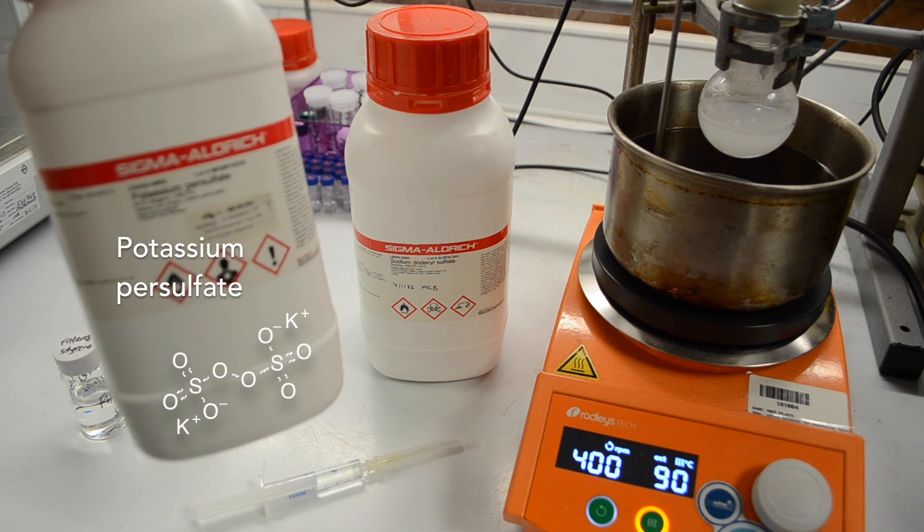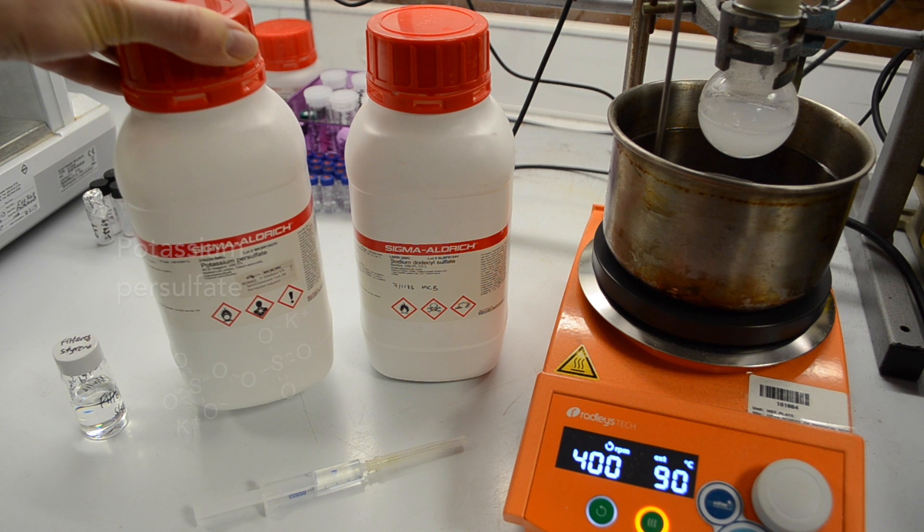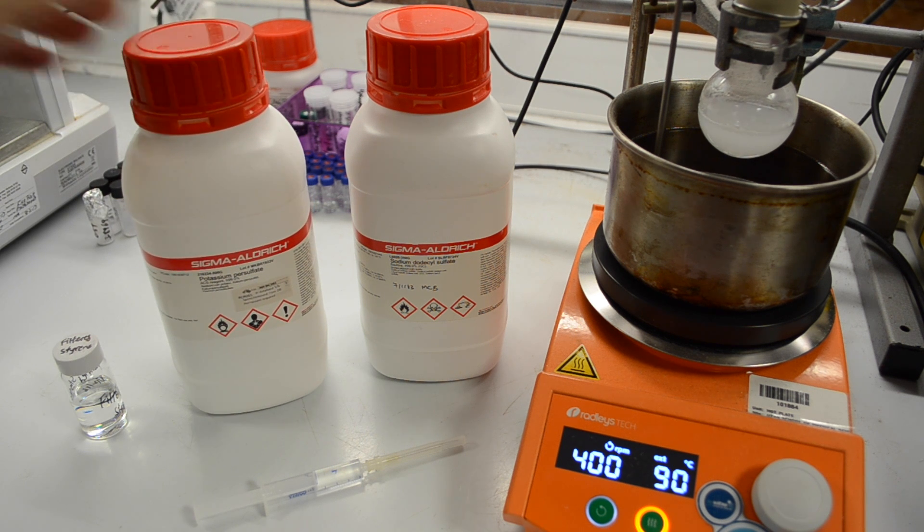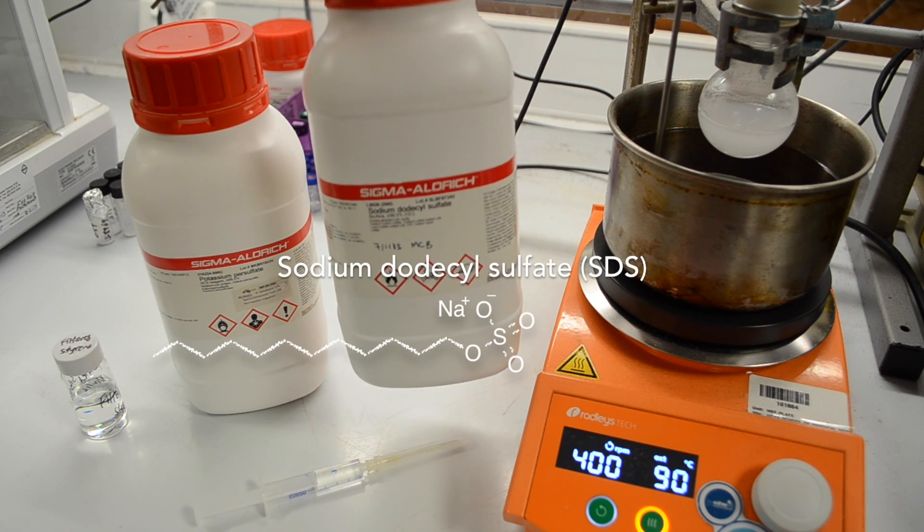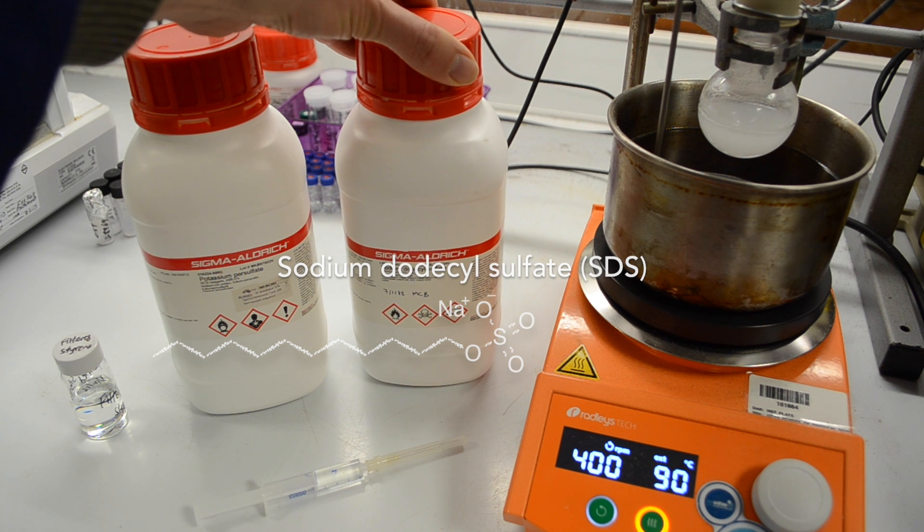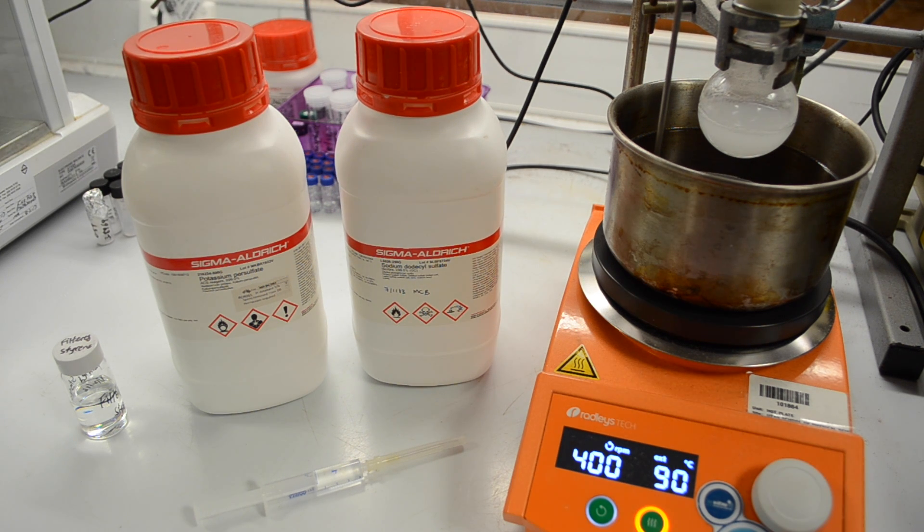We've got an initiator. The initiator is a commercially available material known as potassium persulfate. It's a salt that decomposes into free radicals that can initiate the polymerization. And we also have a surfactant, sodium dodecyl sulfate, which is like a soap. It helps emulsify two immiscible liquids such as styrene and water.